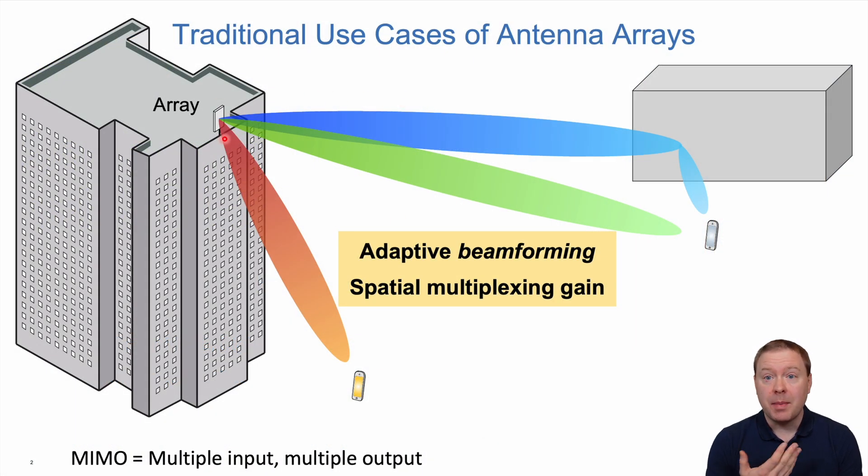Antenna arrays are used on base stations for adaptive beamforming to direct signals towards user devices in particular directions, and for spatial multiplexing where you can send multiple data streams towards the same device and different devices simultaneously. This is also known as multiple input multiple output.